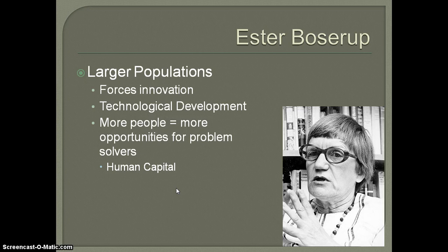The idea is that larger populations, because of the strain they create, are really going to force some sort of innovation. People are going to have to figure out ways to provide for larger populations. It seems to happen time after time, especially since the industrial revolution and the agricultural revolution. We've been able to figure out ways to provide for more people, largely through technological development — whether it was the green revolution or today's bio revolution — developing technologies to provide for more people in less space.